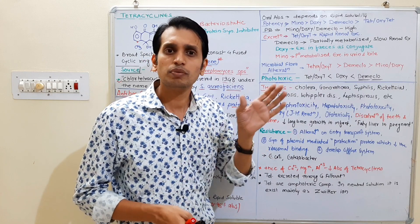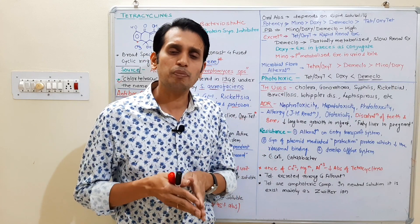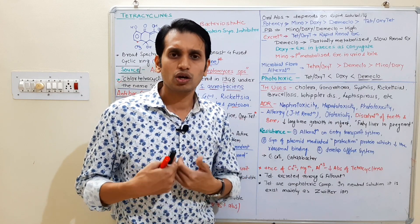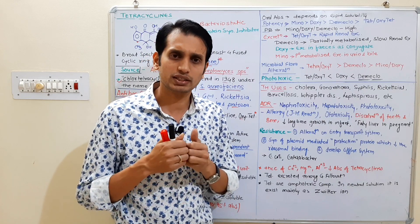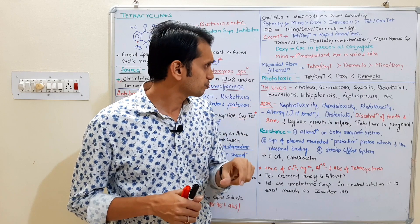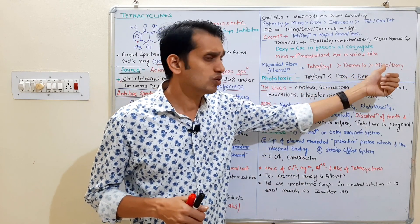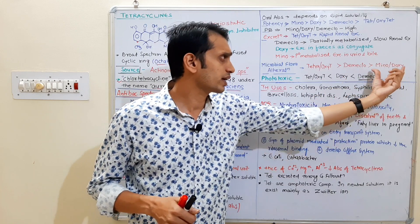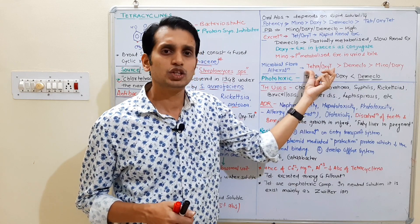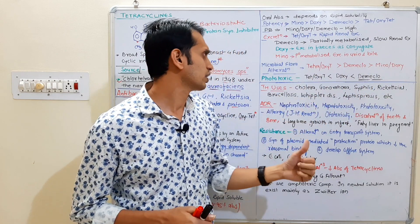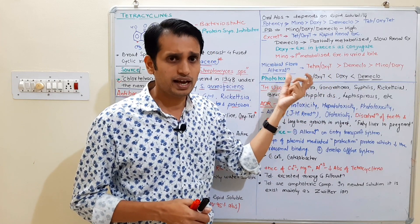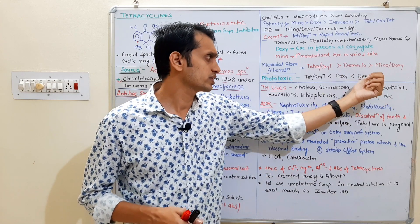Tetracyclines are broad spectrum antibiotics which can affect the gut flora, causing diarrhea. Tetracycline and oxytetracycline have more effect on gut flora compared to demeclocycline and minocycline. Regarding phototoxic effect: tetracycline and oxytetracycline have a lesser phototoxic effect compared to doxycycline and demeclocycline.